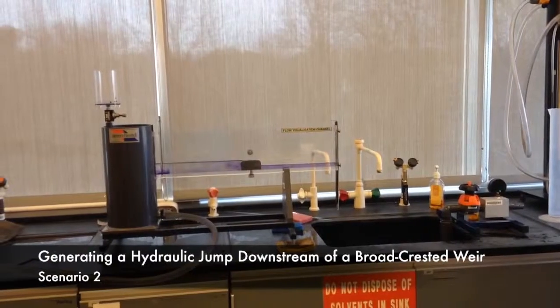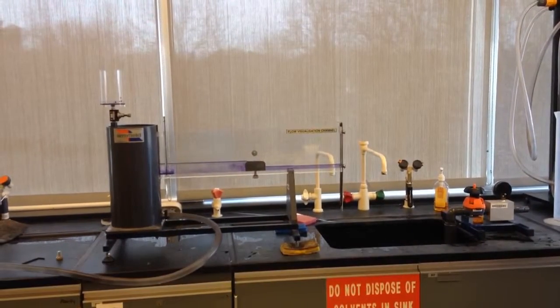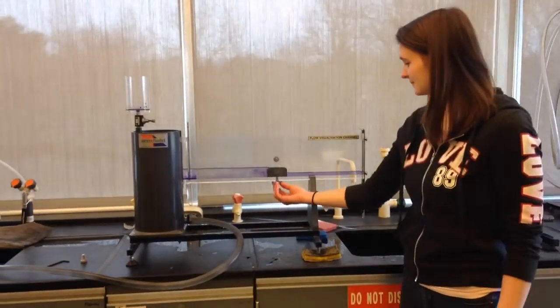Generating a hydraulic jump downstream of a broad-crested weir. First, insert the broad-crested weir in the middle of the channel.